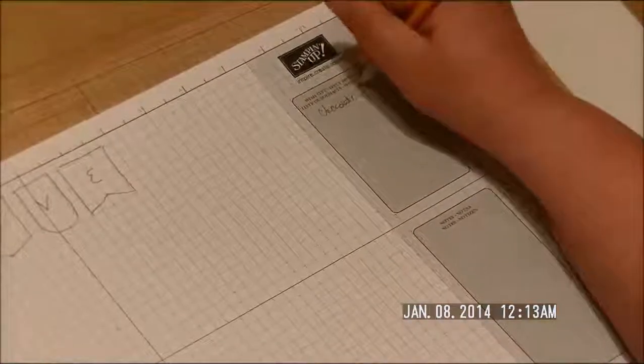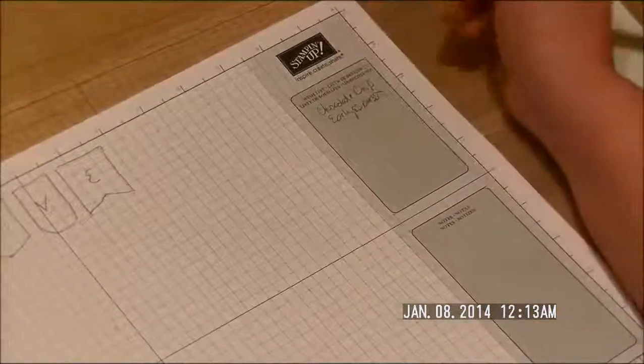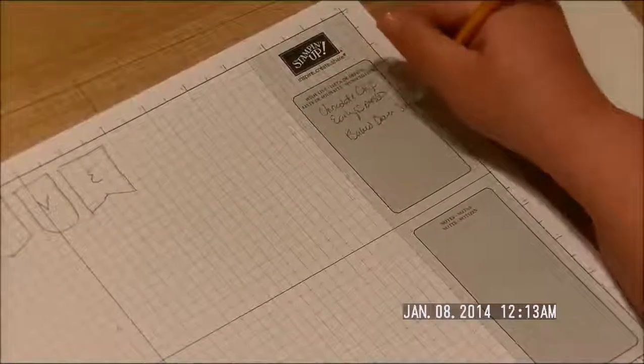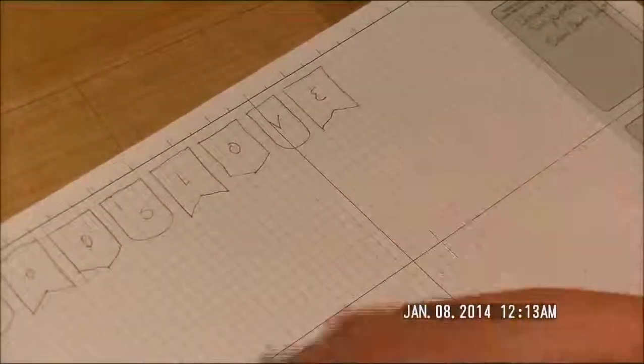I want to use three different styles because this kit actually comes with three different styles, and I select three different colors. I'm going to use Chocolate Chip, Early Espresso, and Baked Brown Sugar, all from Stampin' Up.